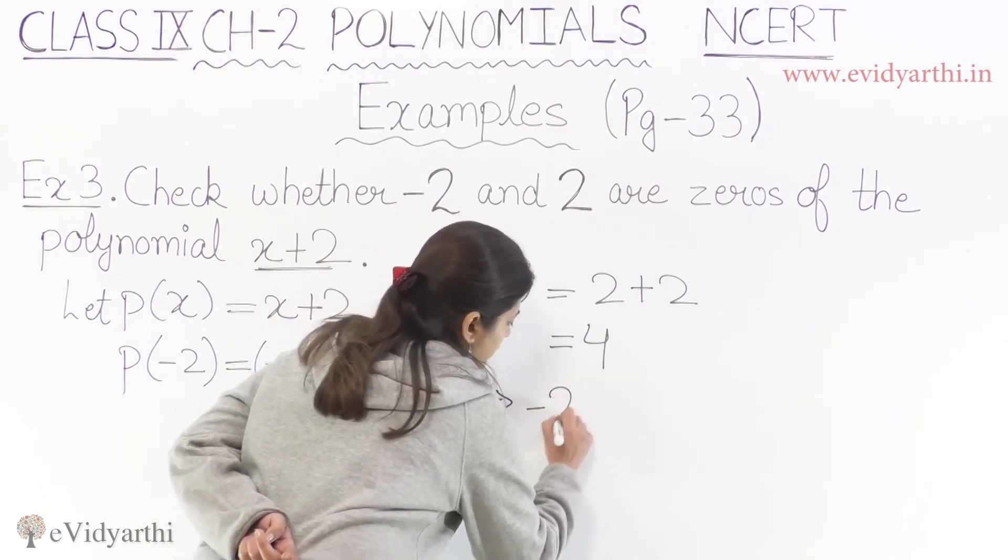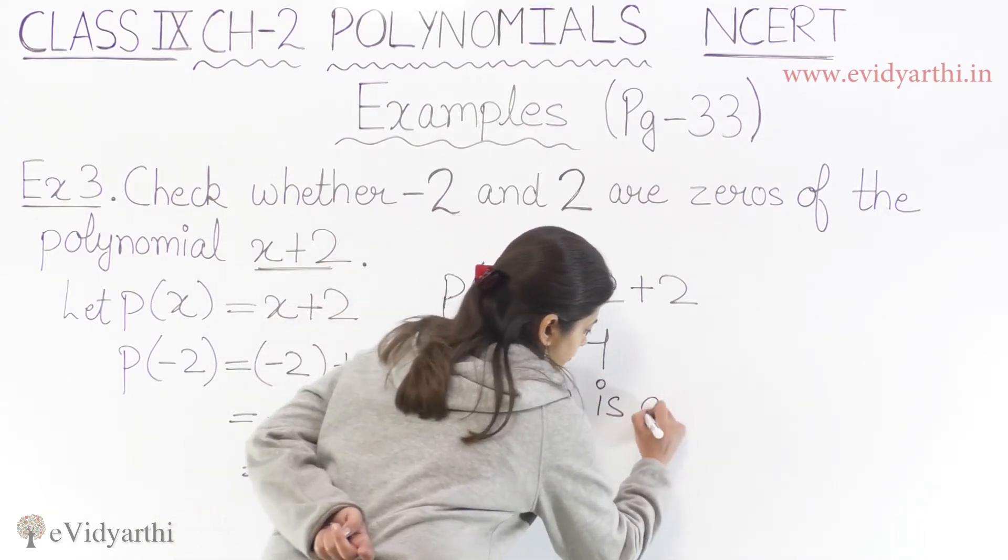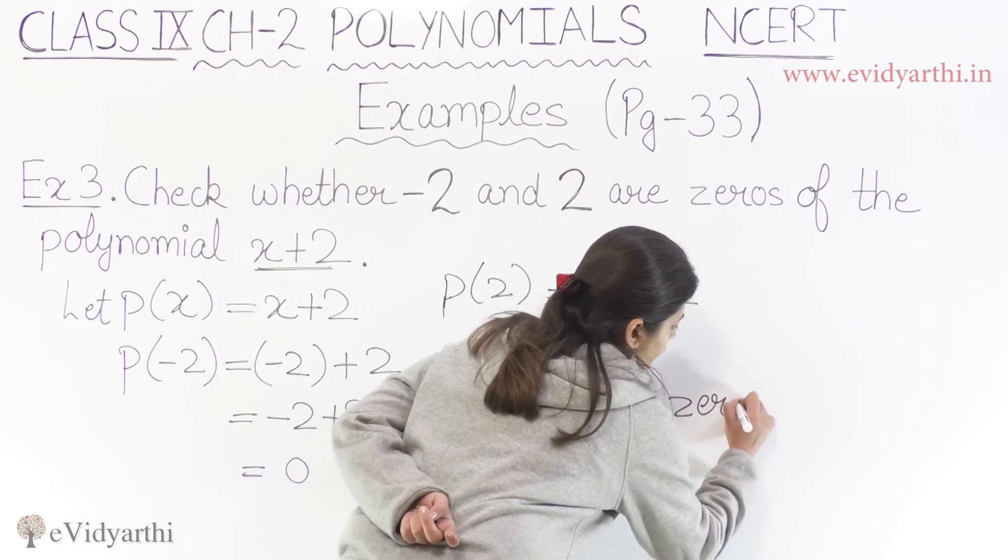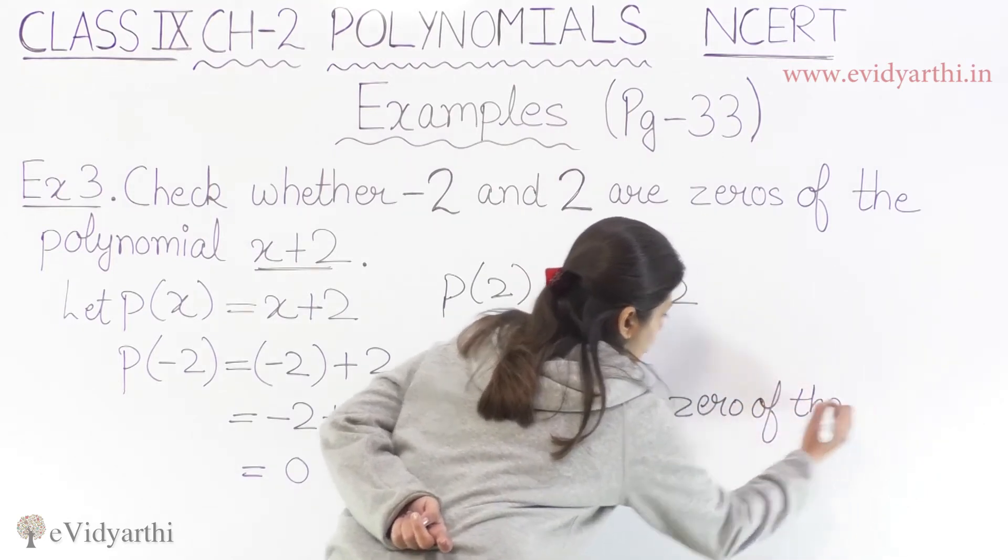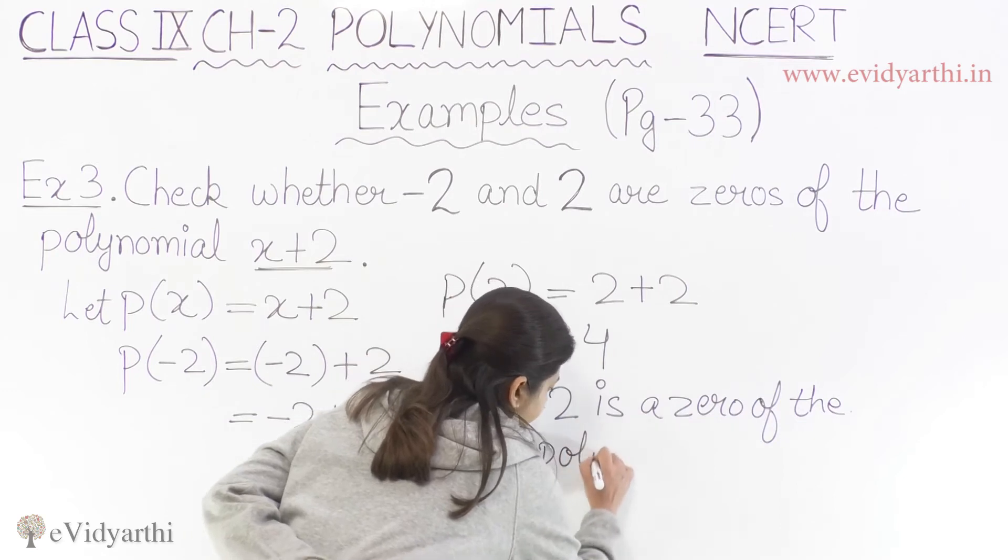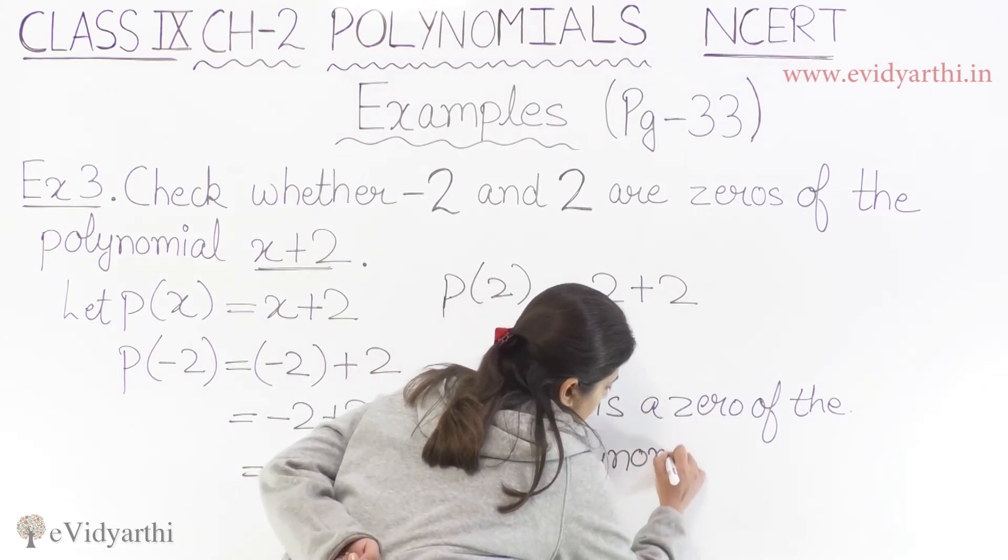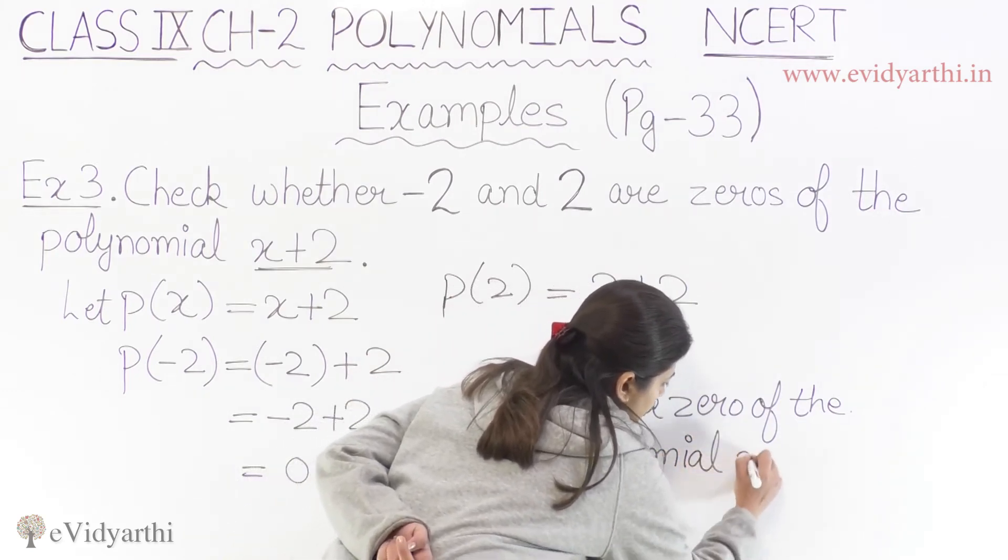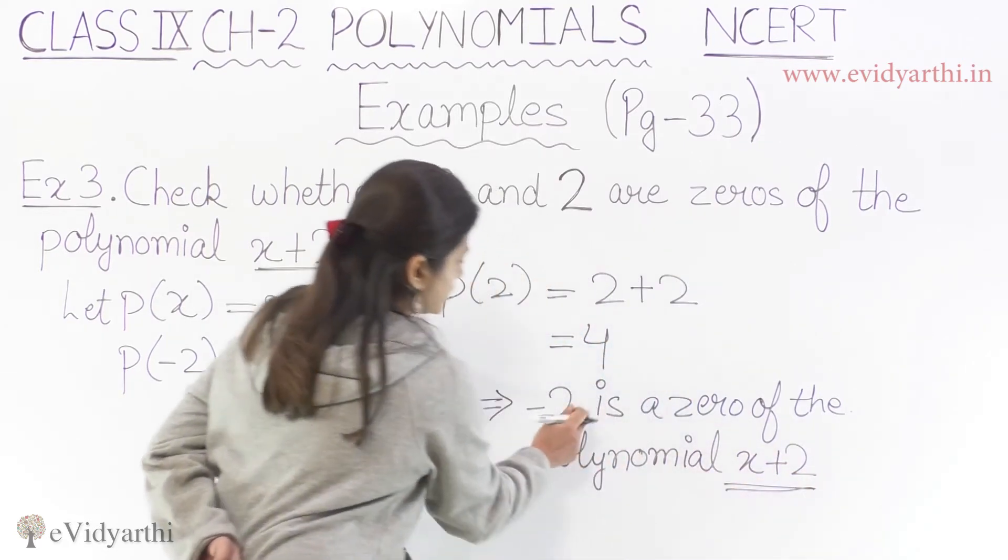This 4 can never be equals to 0. So ultimately we can say minus 2 is a zero of the polynomial, which polynomial? x plus 2. Only minus 2 is a zero.